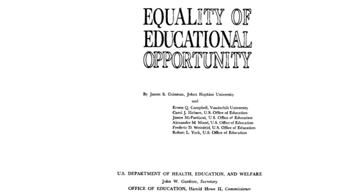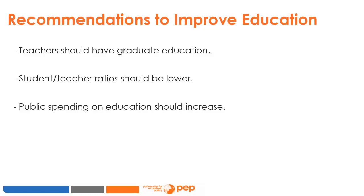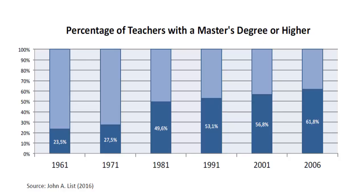At that time in the 1960s, there was a consensus on actions that should be taken to improve the quality of education. These recommendations came from a mixture of theoretical models, behavioral assumptions, and secondary data. To improve education quality, teachers should be more educated, more teachers should have graduate education, the student-teacher ratio should be lower, and public spending on education should increase. Social scientists advised having better educated teachers, smaller classes, and more money invested in education, and the data suggests the government globally followed these recommendations.